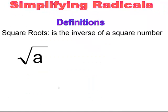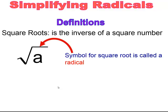Now we're going to talk about simplifying radicals. Square roots are the inverse of squaring. The radical is the symbol for the square root, and the value inside is called the radicand. So when we talk about simplifying radicals, that's what we're referring to.